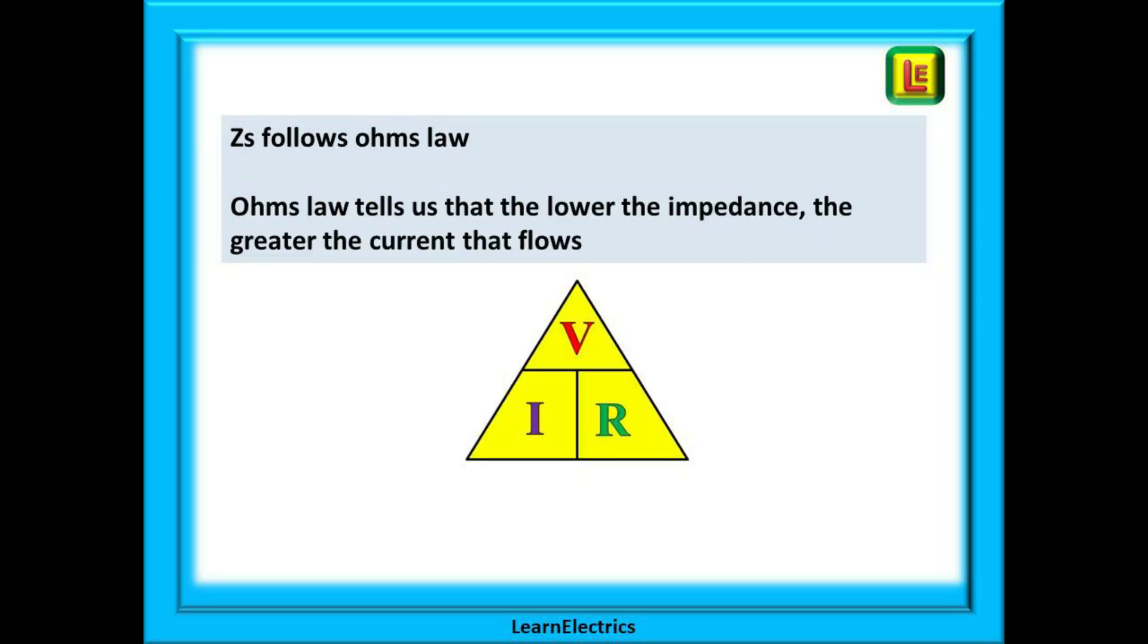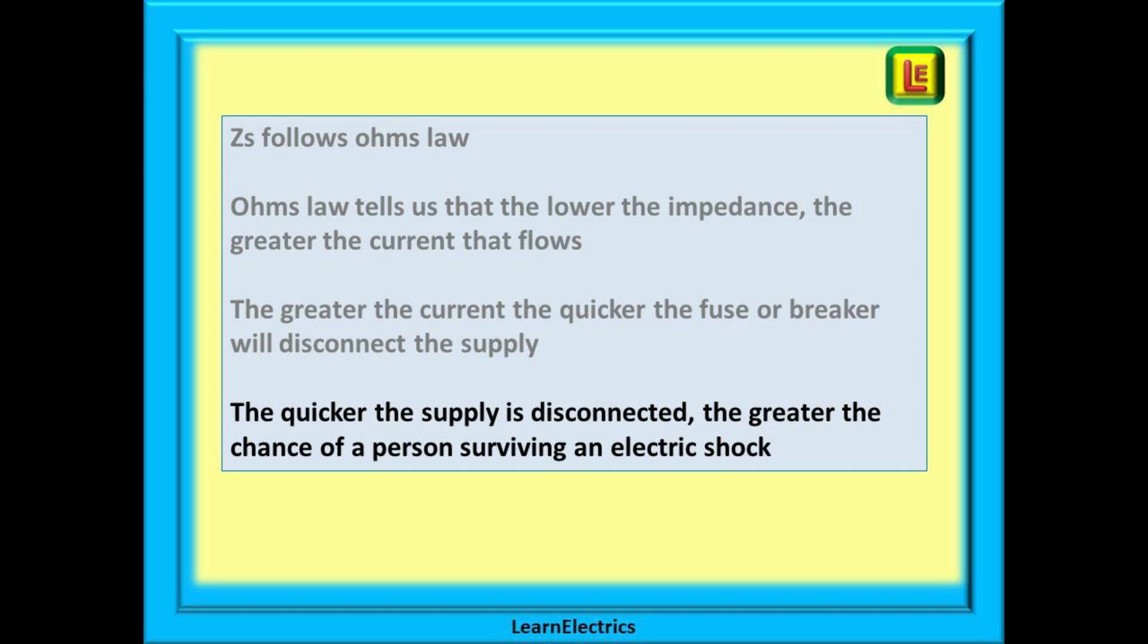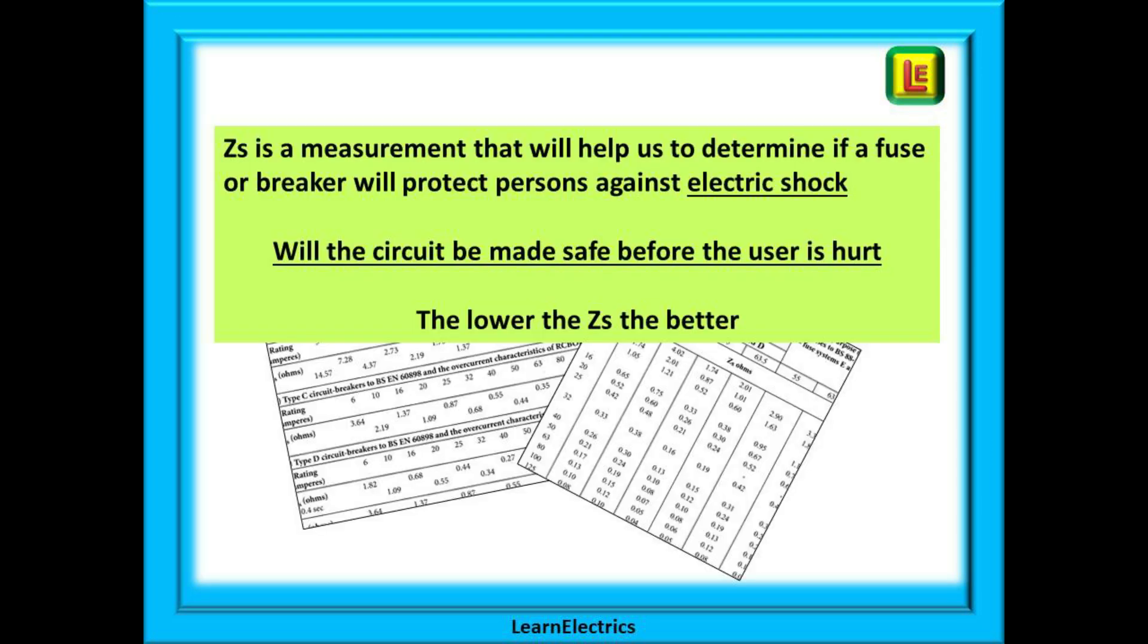Ohm's law tells us that the lower the impedance the greater the current that flows. Impedance down, current up. The greater the current that flows the quicker the fuse or breaker will disconnect the supply, so we want big currents to flow during a fault. And the quicker the supply is disconnected, the greater the chance of a person surviving an electric shock. ZS is a measurement that will help us determine if a fuse or breaker will protect persons against the dangers of an electric shock during a fault. Will the circuit be made safe before the user is hurt? The lower the ZS the better because this means bigger currents and quicker disconnection times.